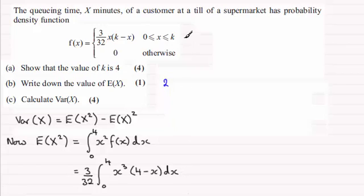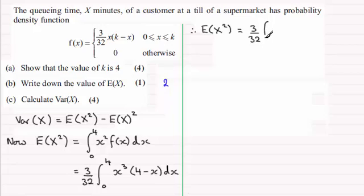So if I just border this off then we've got therefore E of X squared, just put that back in again, it's equal to 3 over 32 multiplied by the integral from 0 to 4. And what I need to do now is just expand the bracket, so you're going to get 4X cubed and then minus X to the power 4. Put that in brackets because we've got more than one term and we integrate that with respect to X.